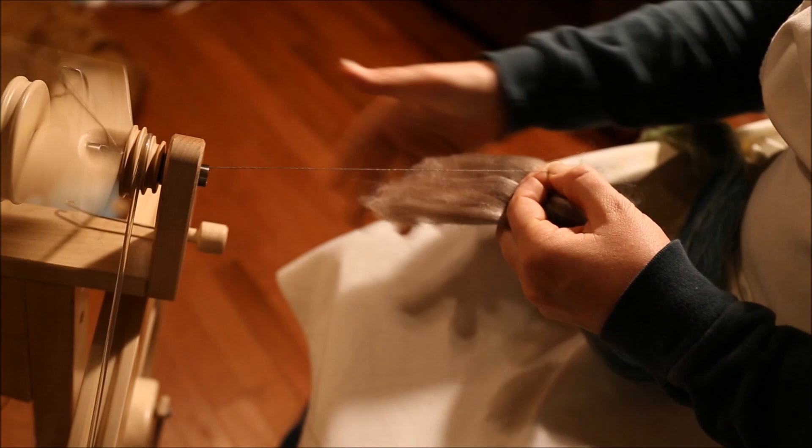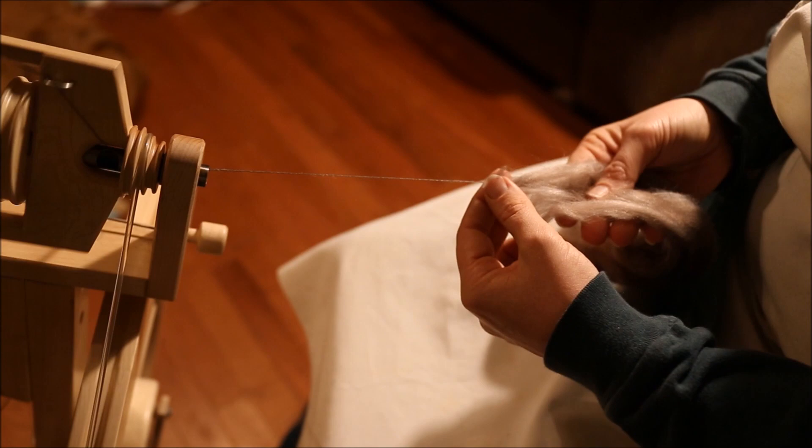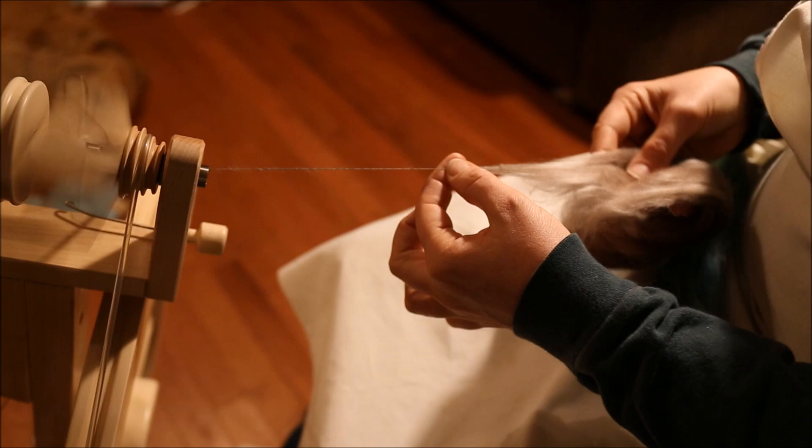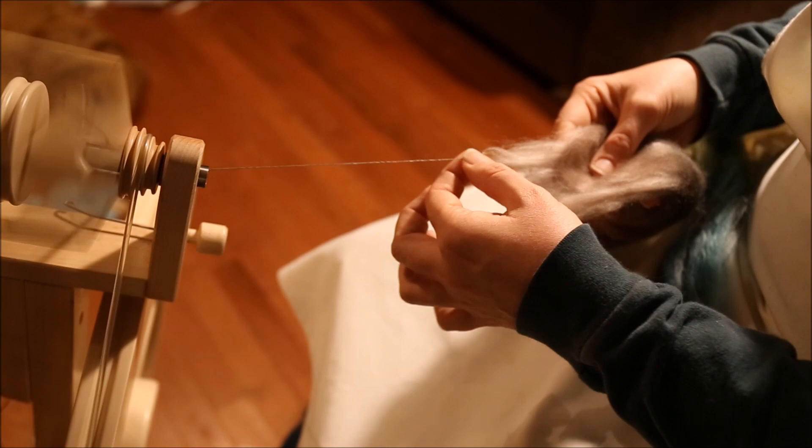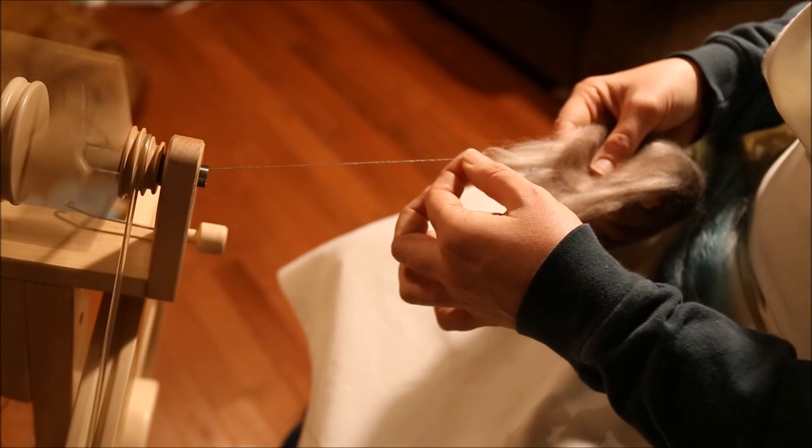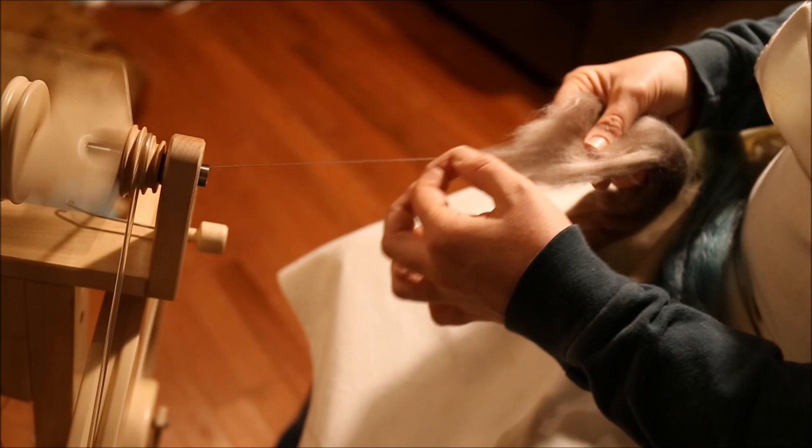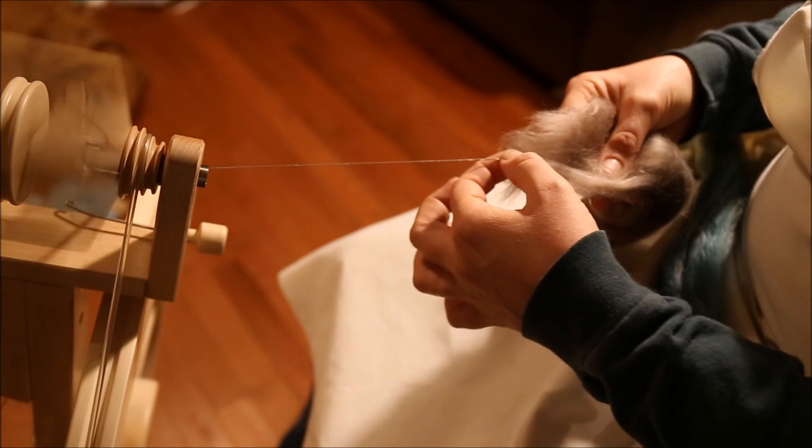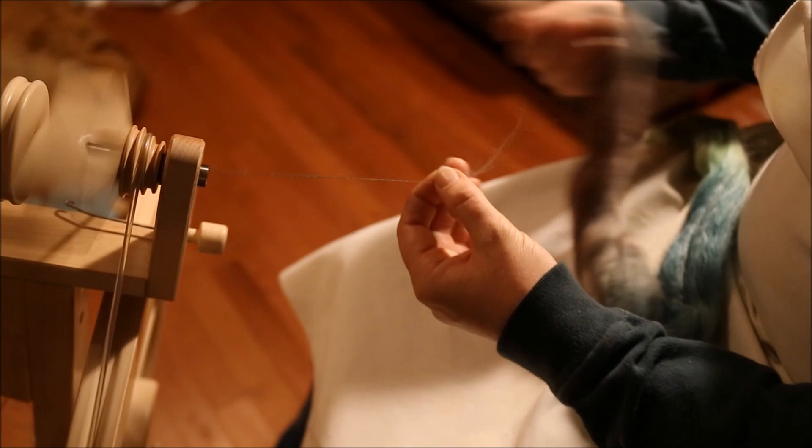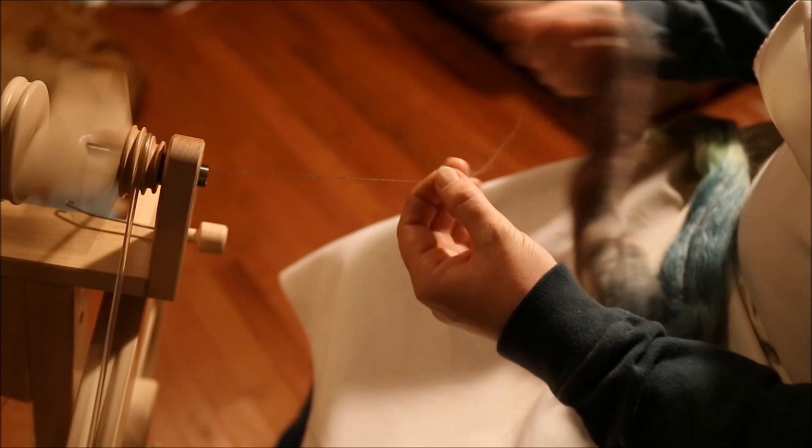the ends of my fiber supply against my single. I have found since I've started doing this type of joining method, I have had many, many fewer breaks when I am plying. So I hope that's helpful. The other thing that you'll see all the time, and this is great for when you're spinning from the fold, is that you lay your single in your fiber supply and then you start drafting as you were before. I find that for me isn't as great because I get thicker bits of fiber coming out. This single, especially when you're spinning a high twist yarn like I am right now—this is for socks—